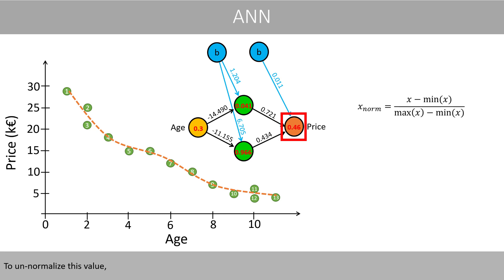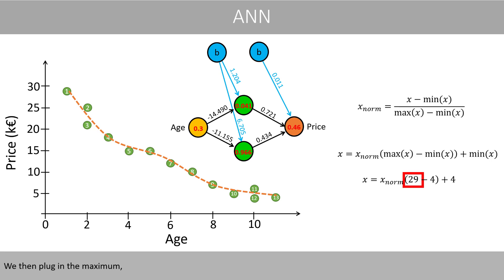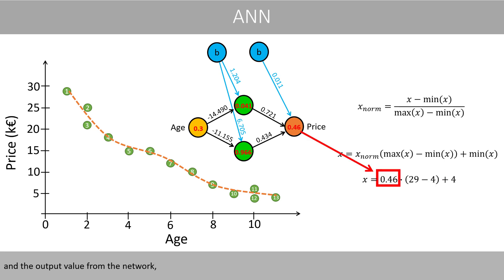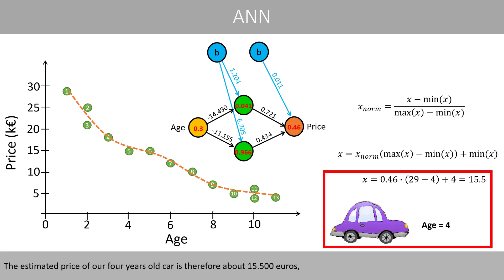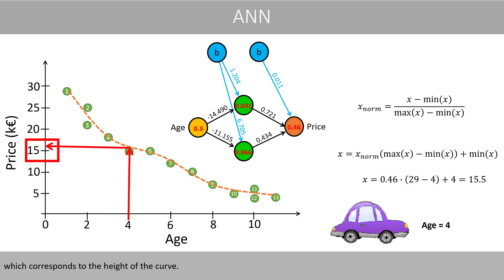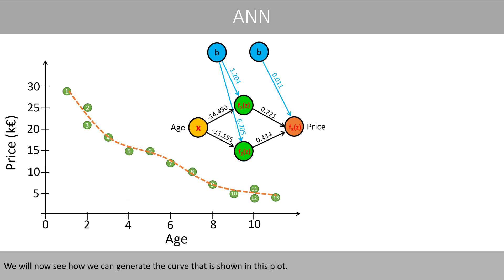To un-normalize this value, we need to solve the normalization equation for x. We plug in the maximum and the minimum value of our training data and the output value from the network and do the math. The estimated price of our 4-year-old car is therefore about 15,500 euros, which corresponds to the height of the curve shown in the plot.